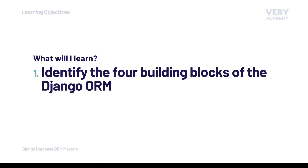The Django ORM has an extensive set of features, which can make learning it tricky if we try to tackle it all at once. To help us learn the features from a developer perspective, we identify the four major components of the Django ORM introduced in this tutorial. Although you may not be familiar with database technology, Django primarily supports relational databases.